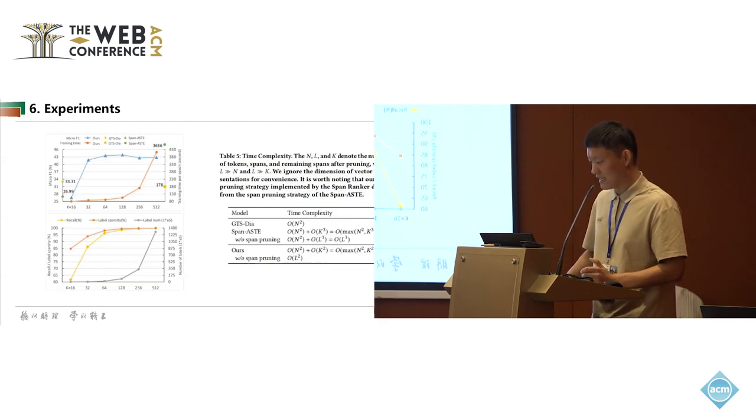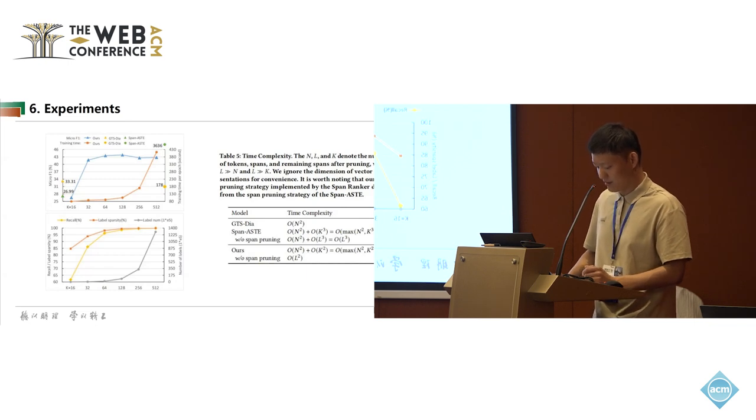Besides, we study the effect of key value. The key value denotes the number of remaining spans after pruning, determining the size of the span-level matrix. When we choose a suitable key value, such as K=64, our model obtains state-of-the-art performance with faster efficiency than baselines. The performance of our model is suboptimal with a small key value, such as K=16. The reason is that a small key value corresponds to a low recall. The performance does not infinitely increase with the increase of K. The reason is that the number of non-none labels has an upper bound.